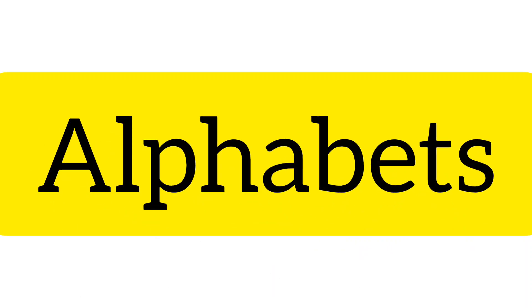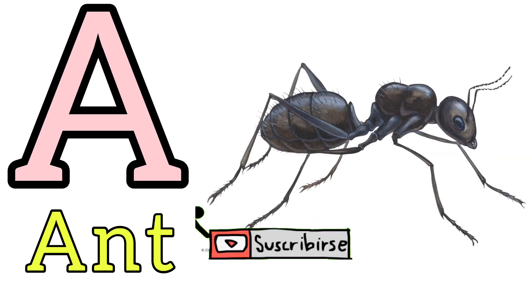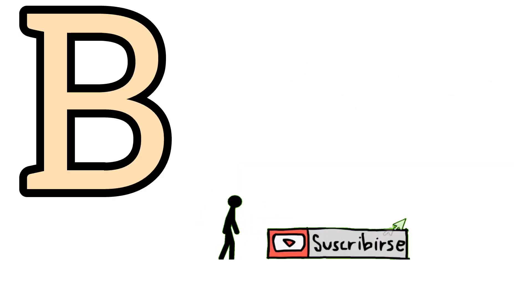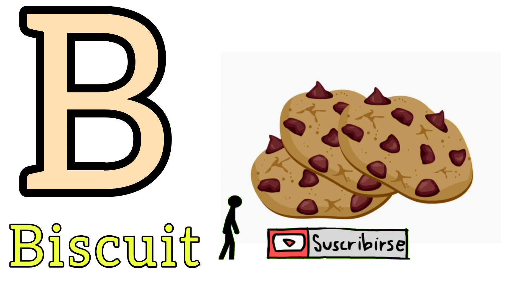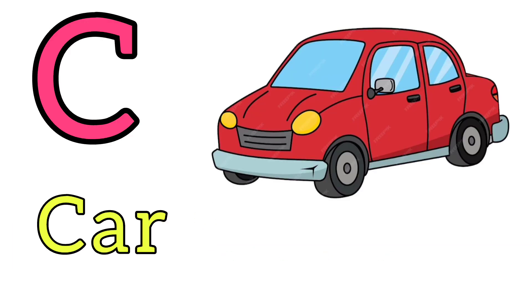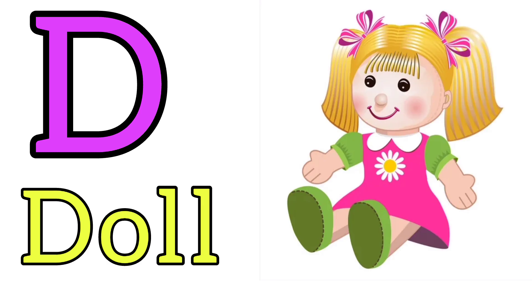Alphabets. A, A for Ant. B, B for Biscuit. C, C for Car. D, D for Doll.